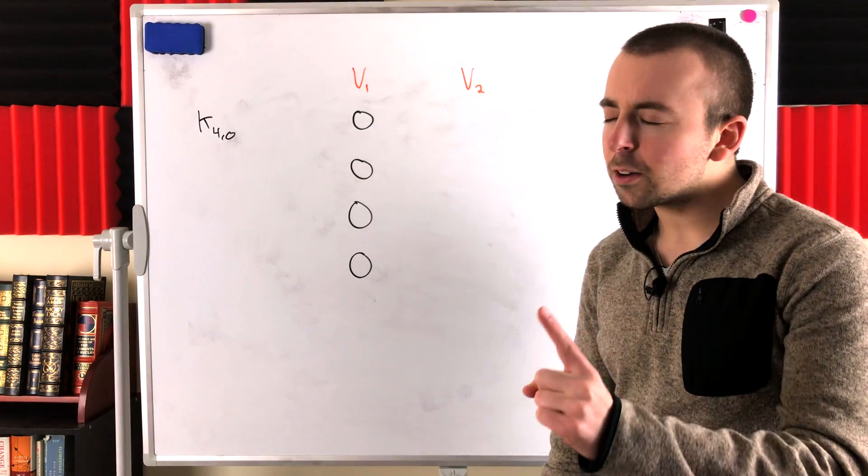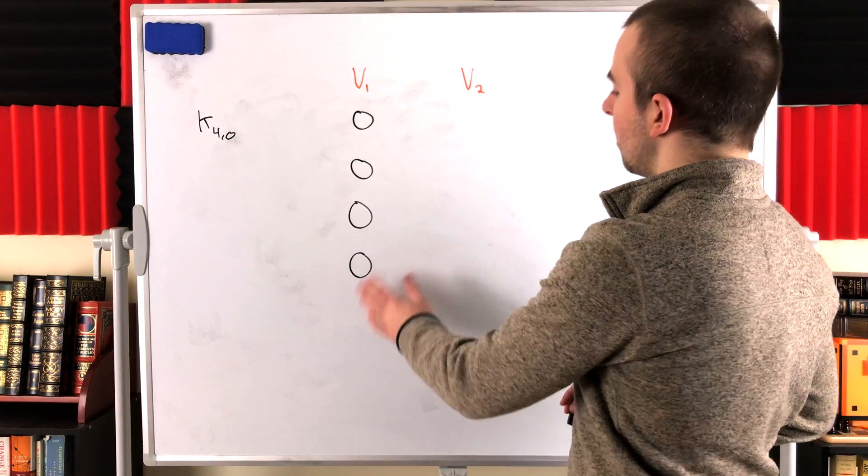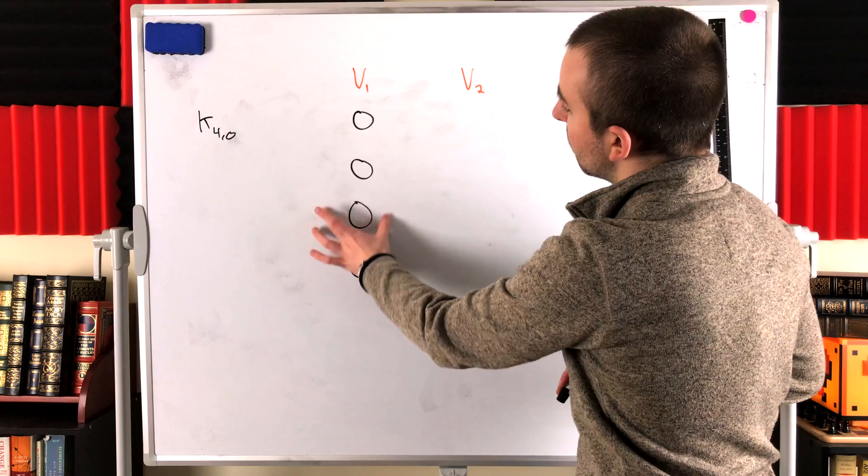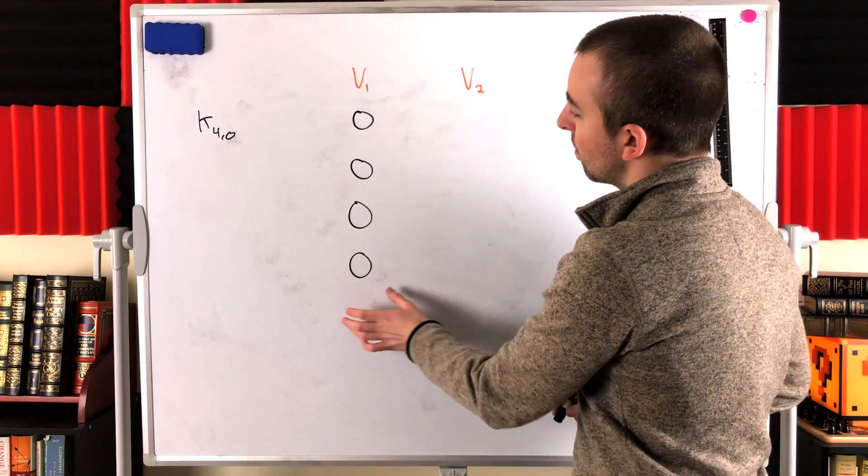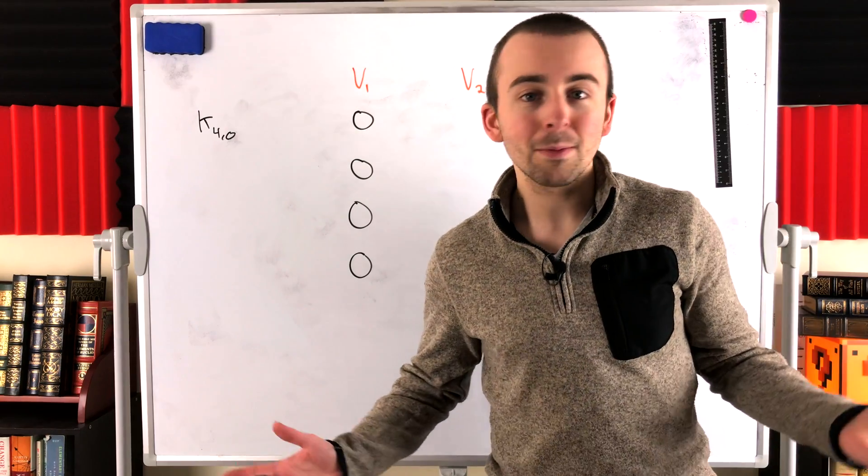Because for starters, is it bipartite? Yes, it is. We already talked about that. We can partition the vertices in such a way that no two vertices in the same set are adjacent to each other. Just so happens that one of the sets is empty, but that's fine.